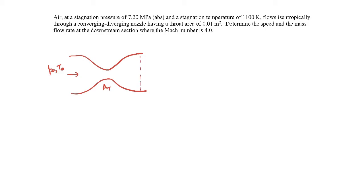Somewhere in the diverging section, the Mach number is equal to 4. Since we're starting from stagnation conditions and reaching supersonic conditions, we have to go through a throat, and that throat has to be the sonic area. The flow upstream will be subsonic with increasing speed. Since the flow becomes supersonic, it must be Mach number 1 right at the throat, so the throat area is the sonic area. The flow then becomes supersonic in the diverging section.